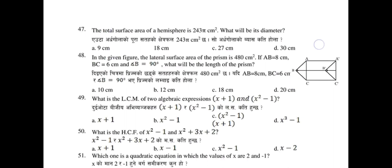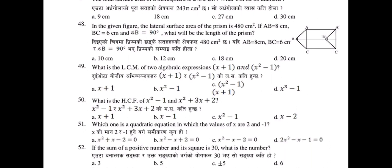Question 48: In the given figure, the lateral surface area (LSA) of a prism is 480 cm². If AB equals 8 cm, BC equals 6 cm, and angle B equals 90°, what will be the length of the prism? Select the correct answer.